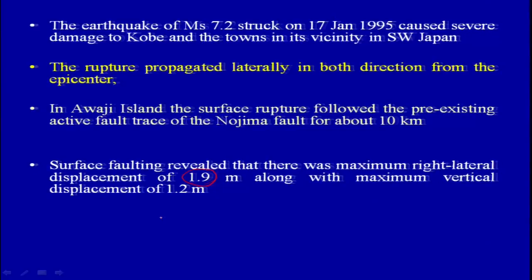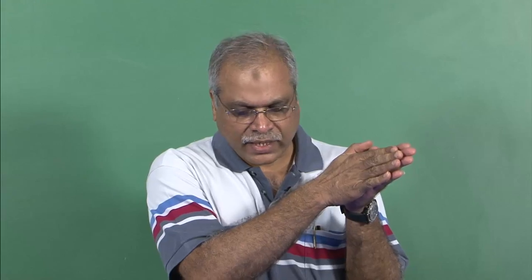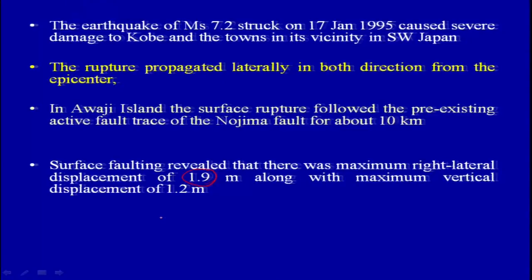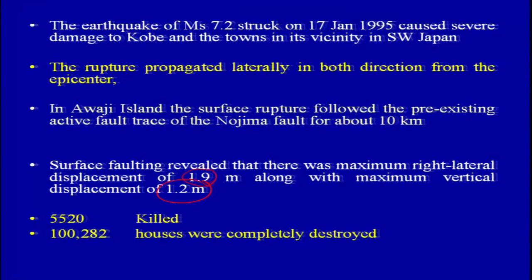So what exactly happened was that you had lateral movement, but along with this one of the blocks also moved up — you have lateral movement and at the same time oblique slip. The vertical displacement observed was 1.2 meters. You can look at the record of how many people were killed. In terms of combined fault motion, this is a right lateral with oblique slip.